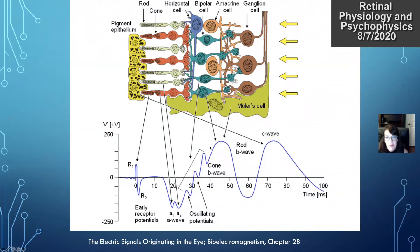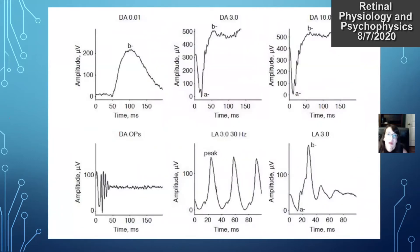Oscillating potentials are attributed here to the bipolar cells, though from what I've read it's more the amacrine cells. These are different images showing normal ERGs in different states. DA is dark adapted state, LA is light adapted. The dark adapted state looks more at rod response, and these numbers correspond to light intensities in candela seconds.